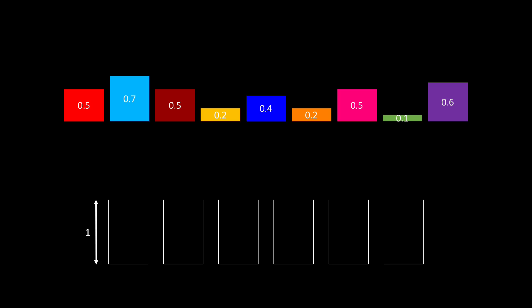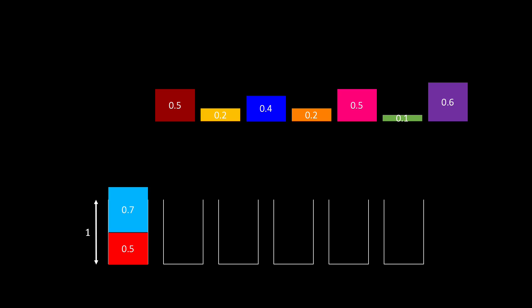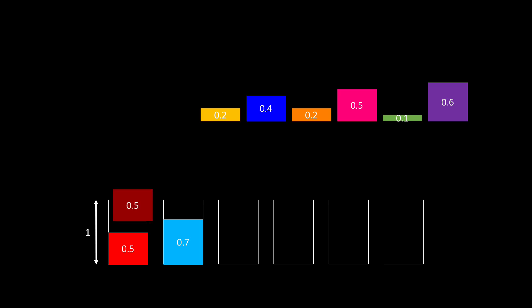Let's see this algorithm in action. The first item goes into the first bin. Now the second item does not fit into the first bin, so it goes into the second bin. However, the following item does fit into the first bin, so we place it there.